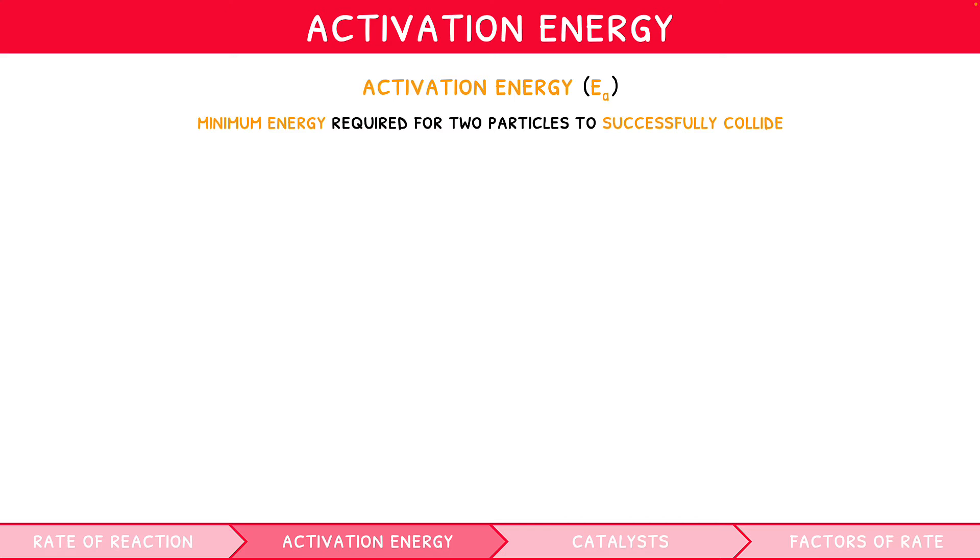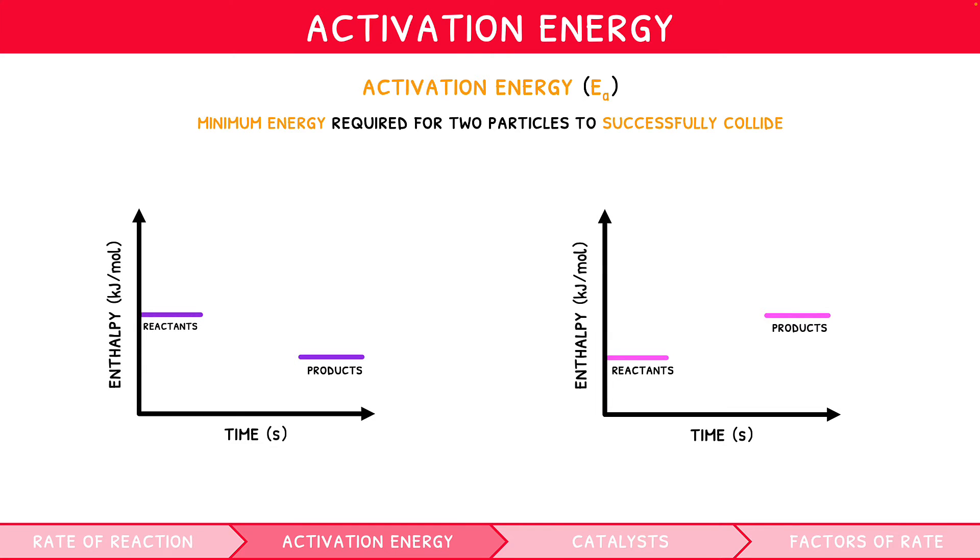Activation energy is defined as the minimum energy required for two particles to successfully collide and produce a reaction. It is commonly represented on a reaction profile diagram, as introduced in our IB Chemistry Topic 5 video series. Remember, a curved line represents the reaction pathway between the products and reactants, drawn at different levels based on if the reaction is endo- or exothermic. Then, enthalpy change is the difference in height between each level.